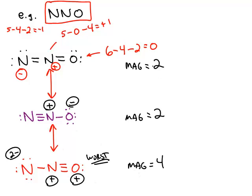The other two have the same magnitude, so now we look at where the negative charge is. The middle structure has the negative on oxygen, and oxygen is to the right of nitrogen on the periodic table.